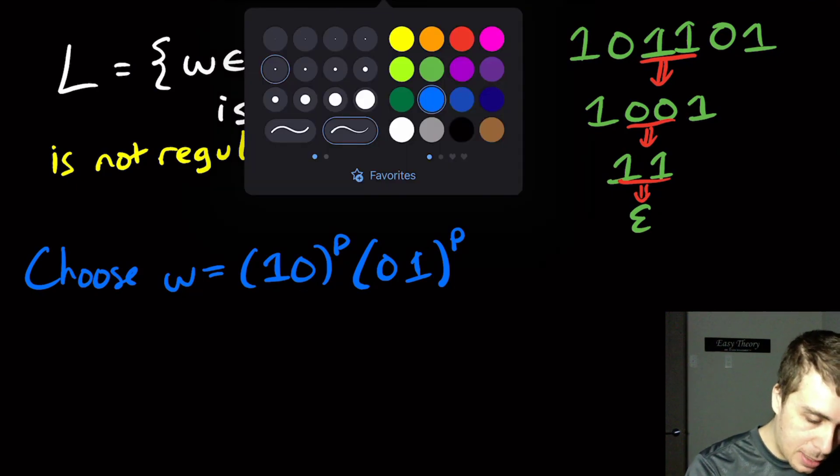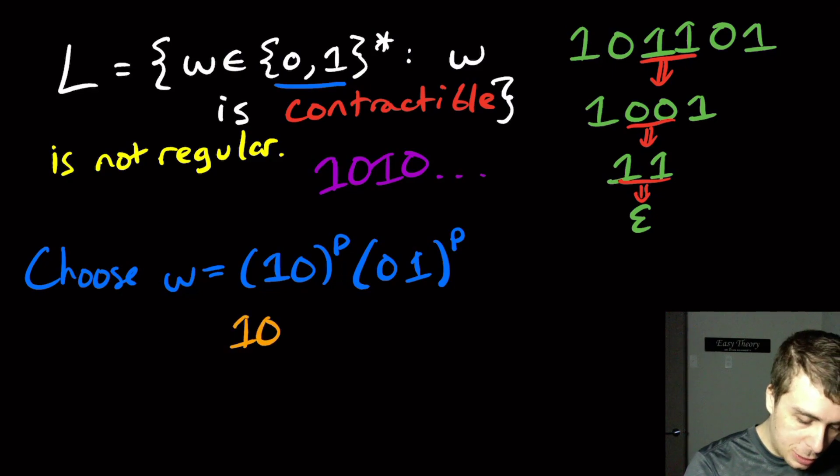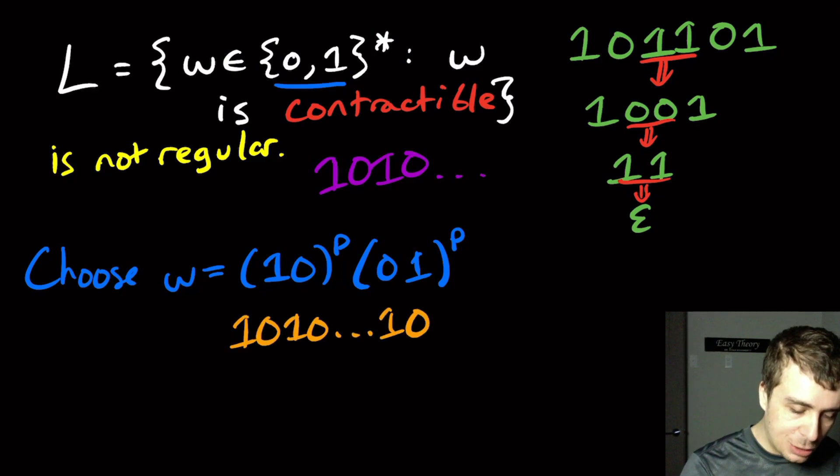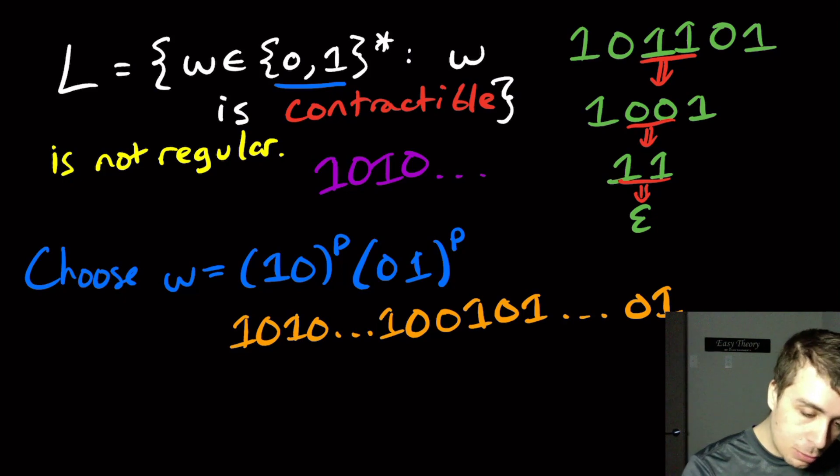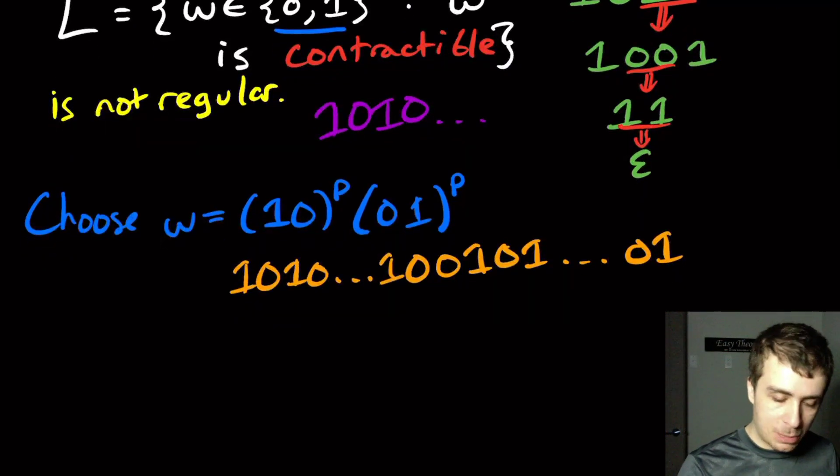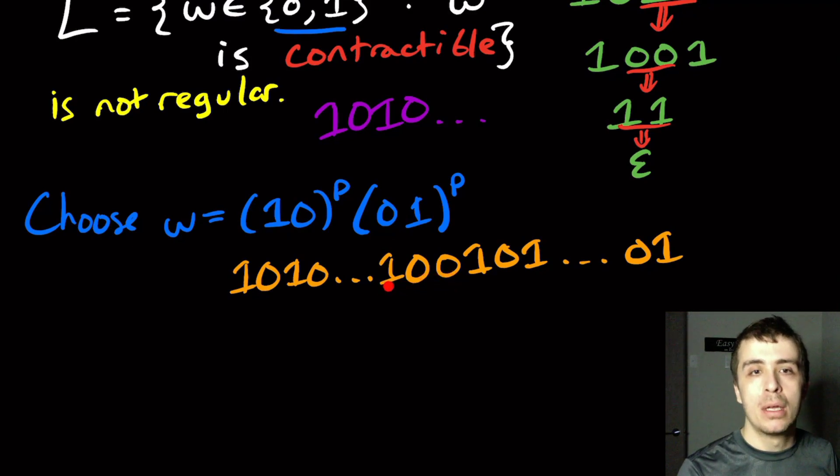What does the string look like? It's going to be 10, 10, blah blah blah, up to the last 10, and then it switches over to 01s. It's just barely contractible because the only thing that I can contract is this 00 in the middle. Then the ones are going to be able to contract, and then the zeros after that are going to be able to contract, etc.